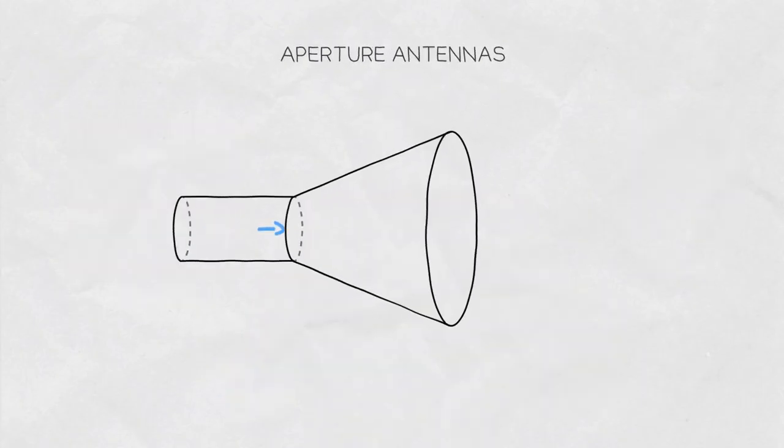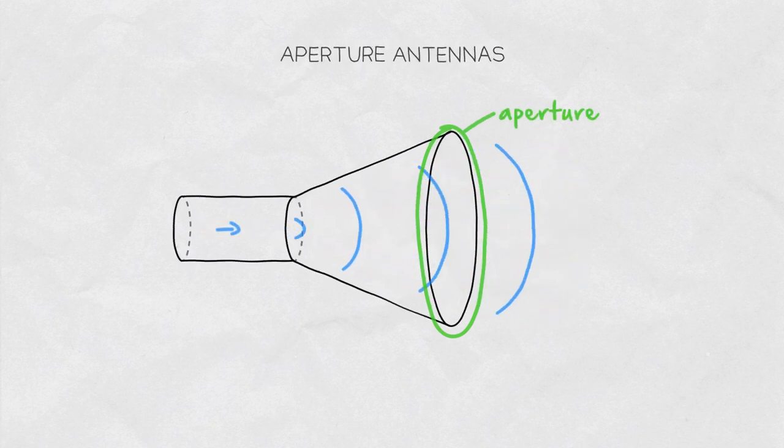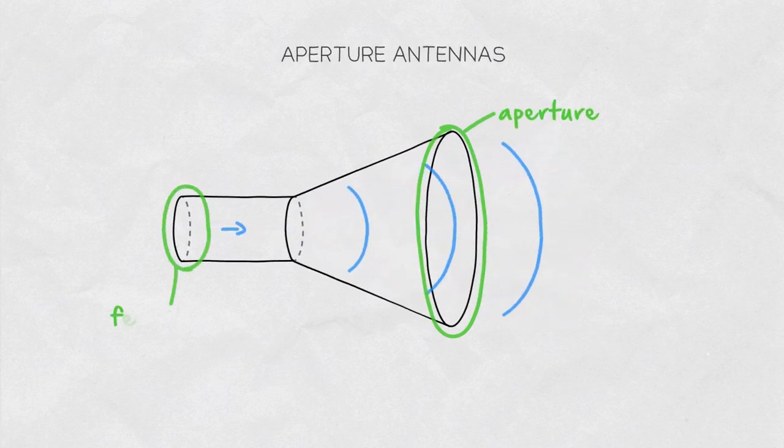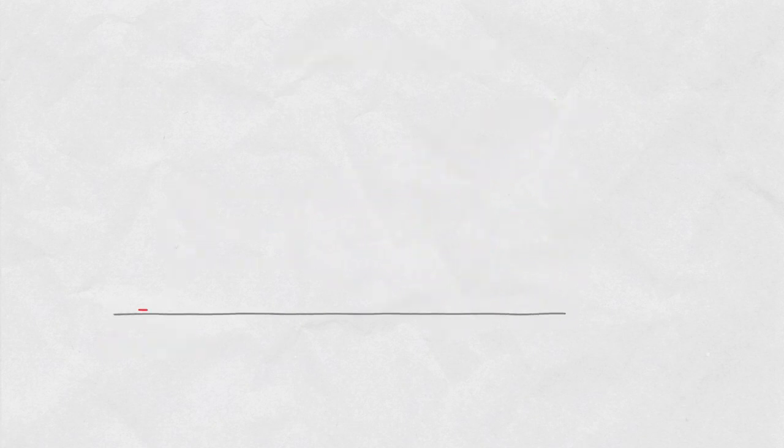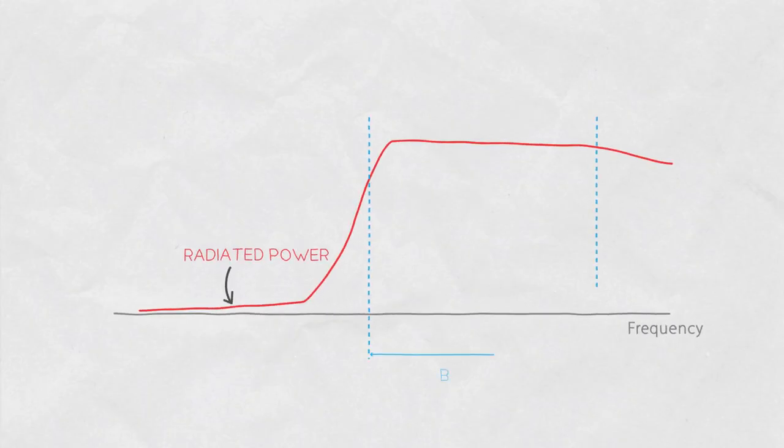Aperture antennas radiate electromagnetic waves through an opening. An example of aperture antennas would be a horn. The radiation diagram of an aperture antenna depends on the size and shape of the aperture, but their bandwidth of operation depends on the size and shape of the feeding structure. This is why the radiation properties and performance of horn antennas are very stable over a very wide band.